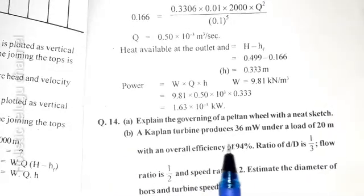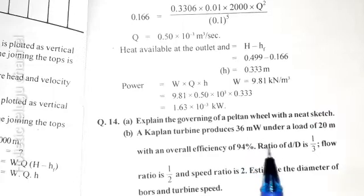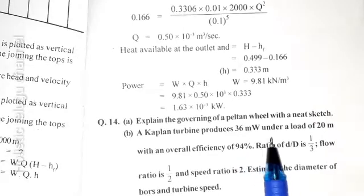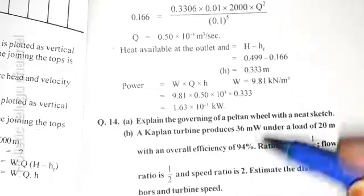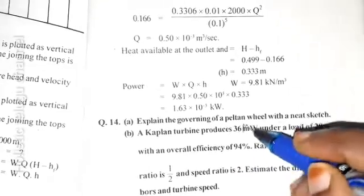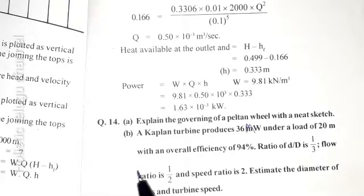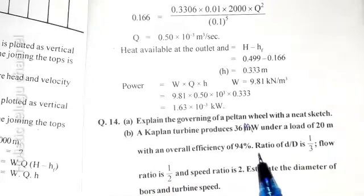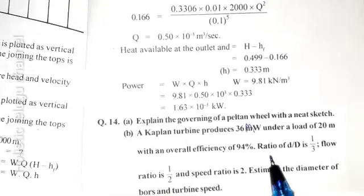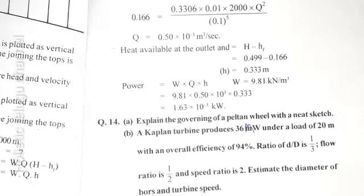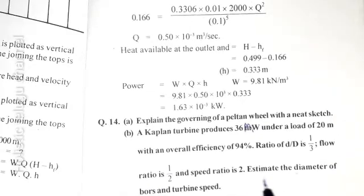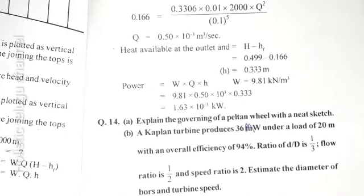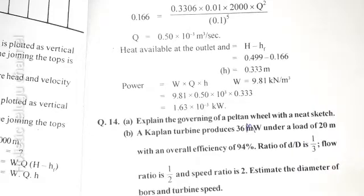A Kaplan turbine produces 36 megawatts under a head of 20 meters with an overall efficiency of 94%. The ratio of D/d is 1/3, flow ratio is 1/2, and speed ratio is 2. Estimate the diameter, vanes, and turbine speeds.